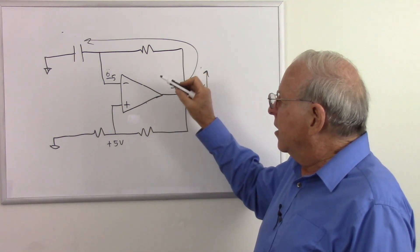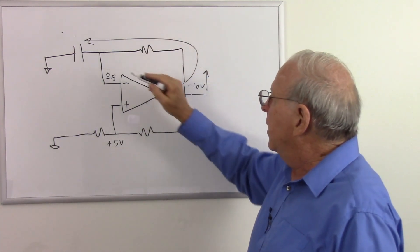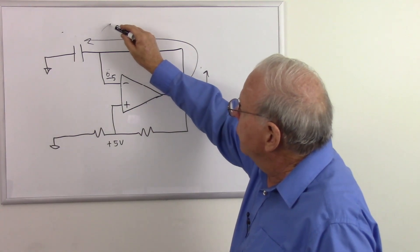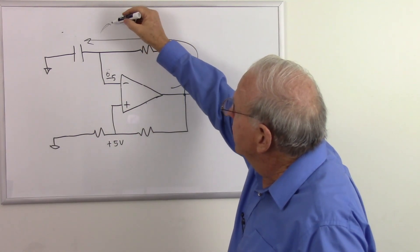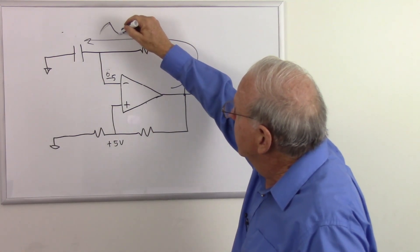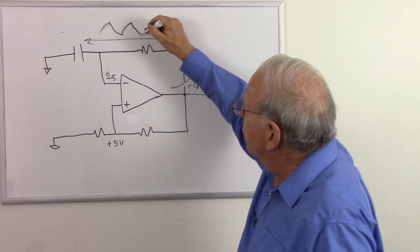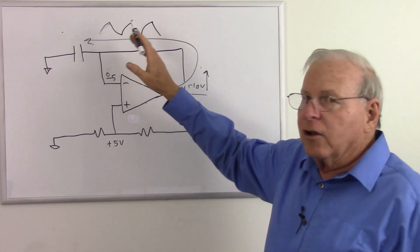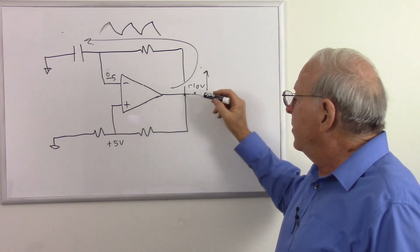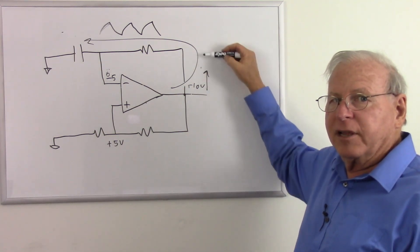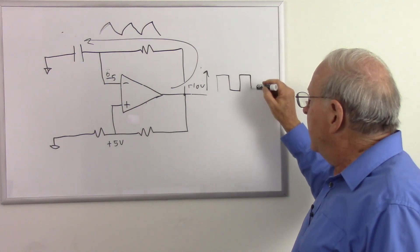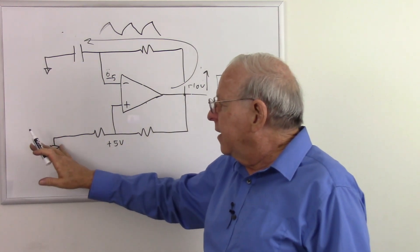So we end up with the same thing happening again as we look at the output. Here we'll get this triangle wave like we did before. A little more. Well, the symmetry depends on something else we'll talk about in just a second. We get that triangle or sawtooth wave here because it goes plus 10 minus 10 plus 10 minus 10. We get a nice little square wave out of it, assuming that this is grounded.